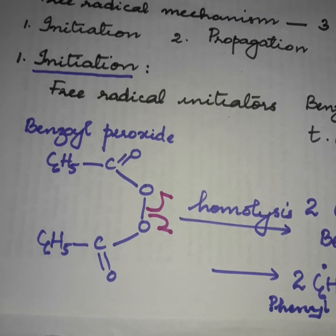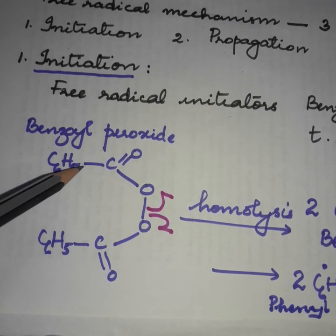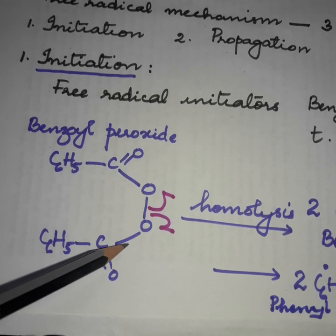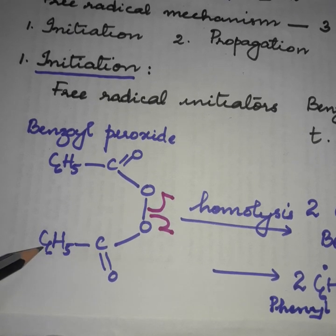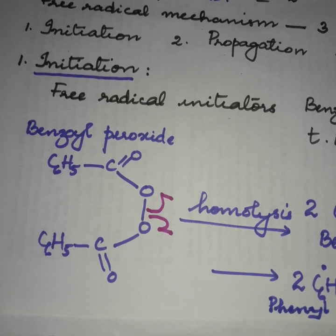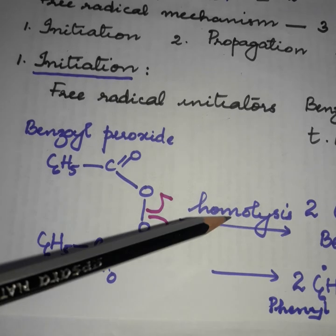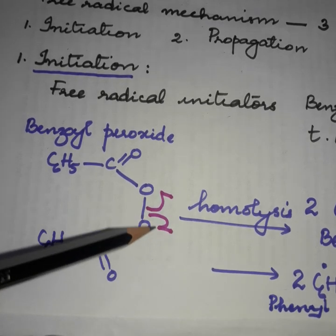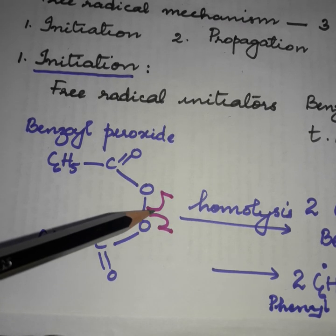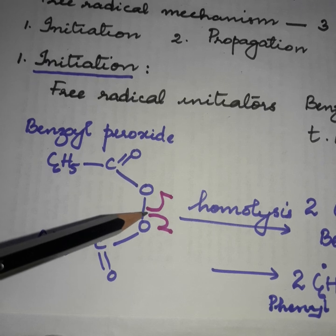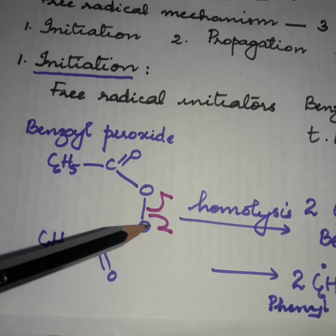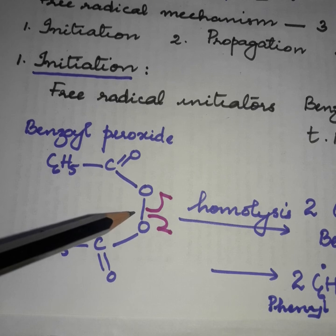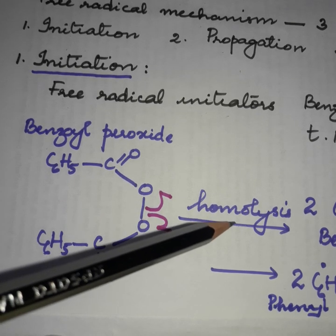Benzoyl peroxide has the formula C6H5-C(=O)-O-O-C(=O)-C6H5. It undergoes splitting to produce two free radicals. Since the splitting results in two equal free radicals, this is known as homolysis.